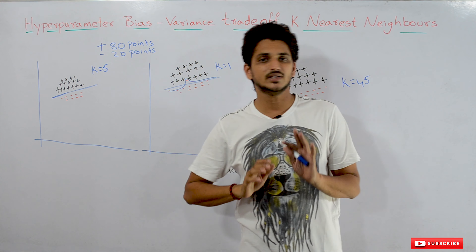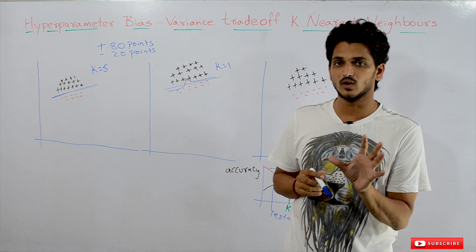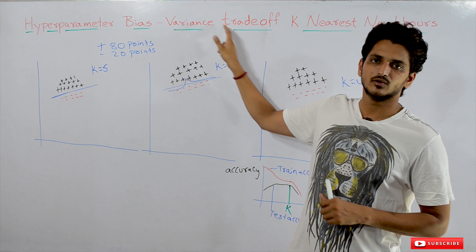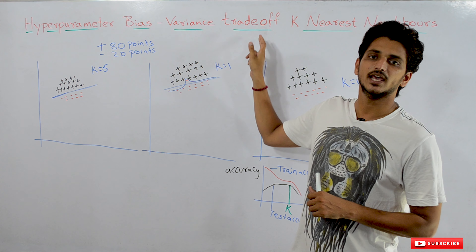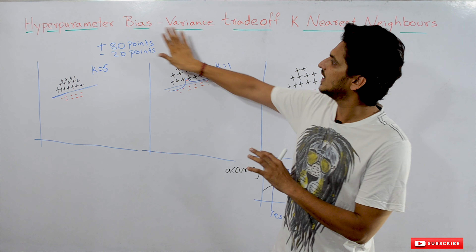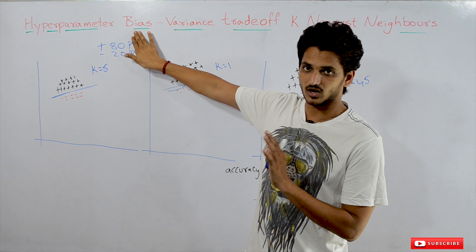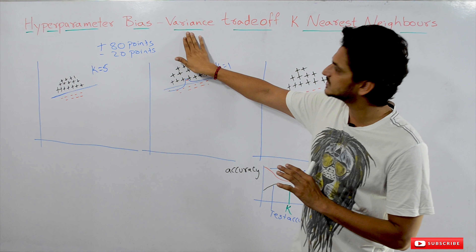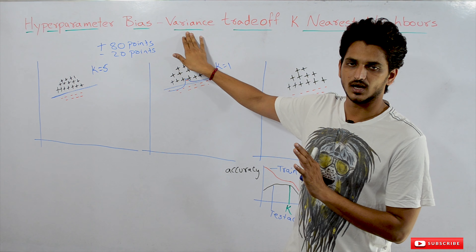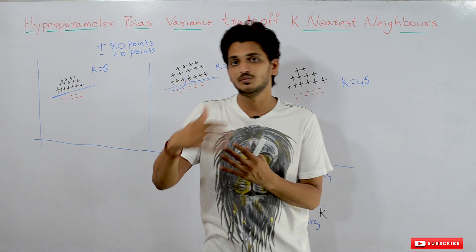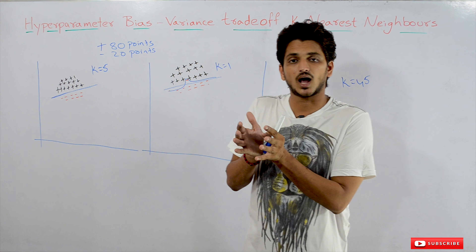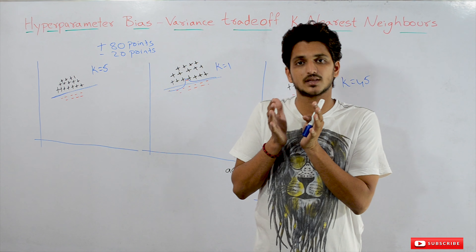In our previous classes, in the Naive Bayes model, we discussed a concept called hyperparameter, underfitting and overfitting. The technical terms for underfitting and overfitting are: high-biased models we call underfitted models, and high-variance models we call overfitted models. In our Naive Bayes model, we found the best alpha — alpha is treated as the hyperparameter.